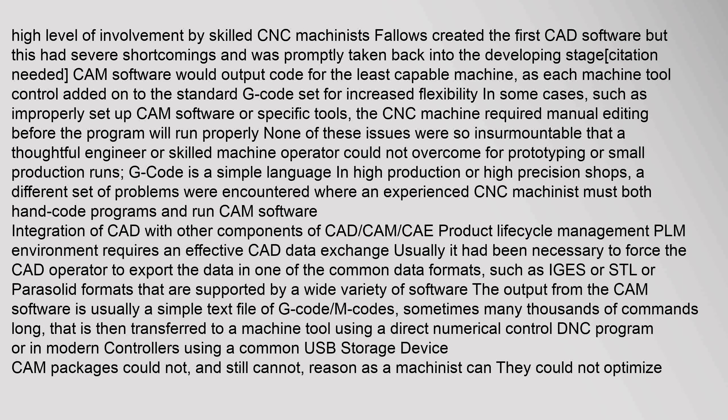Fallows created the first CAD software, but this had severe shortcomings and was promptly taken back into the developing stage. CAM software would output code for the least capable machine, as each machine tool control added onto the standard G-code set for increased flexibility. In some cases, such as improperly set up CAM software or specific tools, the CNC machine required manual editing before the program would run properly. G-code is a simple language in high production or high precision shops.